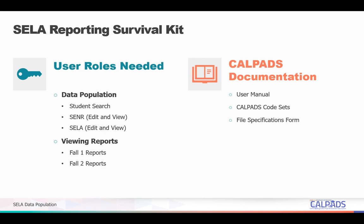Third is the file specifications form, which explains in detail which fields are required and under what conditions. Fourth is the error list, which assists you in determining all of the validation errors and knowing what the suggested resolutions are. Fifth is the data guide, which provides you all the business requirements and rules surrounding ELAS reporting in CALPADS. And last is the valid code combinations, which provides you the acceptable combinations of EL correction codes that you could report for each student.